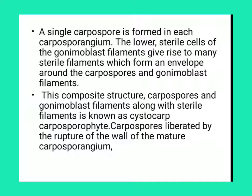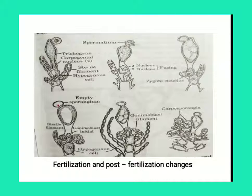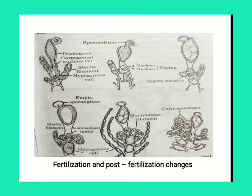A single carpospore is formed in each carposporangium. The lower sterile cells of the gonimoblast filament give rise to many sterile filaments which form an envelope around the carpospore and the gonimoblast filament. This composite structure of the gonimoblast filament along with sterile filaments is known as the cystocarp, or carposporophyte. The carpospore is liberated by the rupture of the wall of the mature carposporangium.